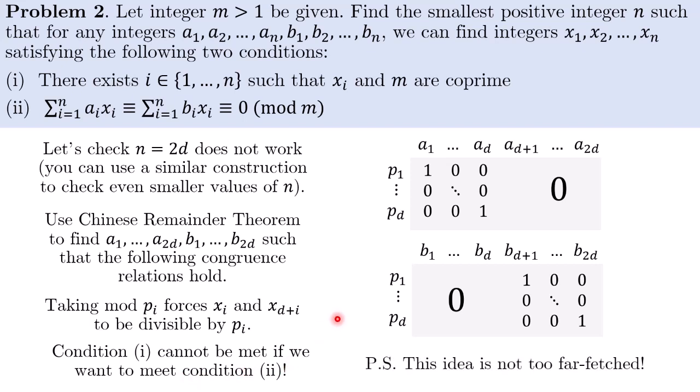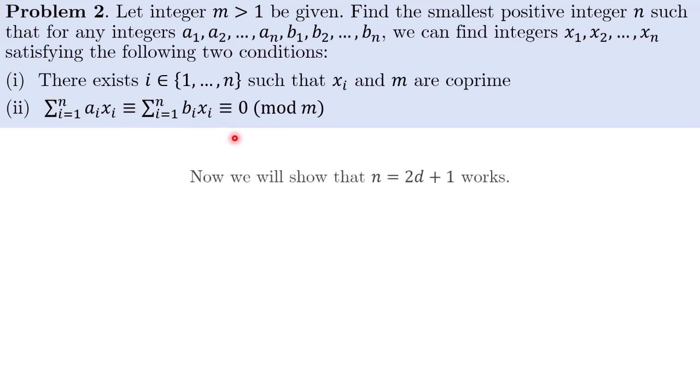Just as an aside, now we see that this idea is actually not too far-fetched because the whole idea is we want to use condition 2 to force x's to share common primes with m. So what better way to force x to take up a certain value than to have 1 and the rest of it being 0 in each row. So with a bit of experimentation, we can actually be led to this construction. Okay, so we have shown that n equals 2d does not work. Now we will show that n equals 2d plus 1 works.